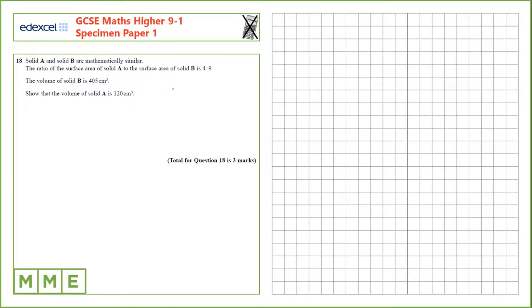Question 18. Solid A and solid B are mathematically similar. The ratio of the surface area of solid A to the surface area of solid B is 4 to 9. The volume of solid B is 405 cm cubed, and we need to find the volume of solid A.